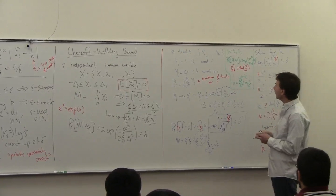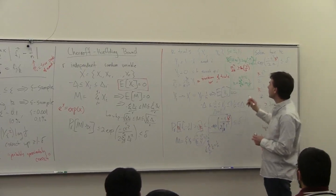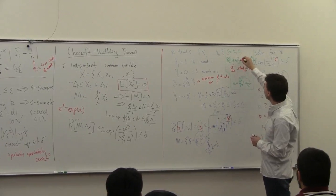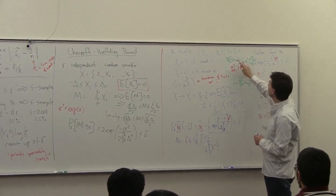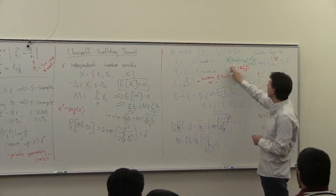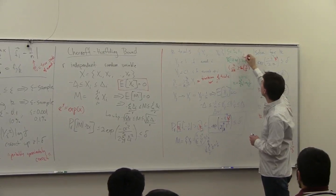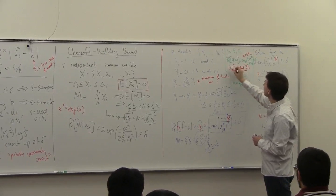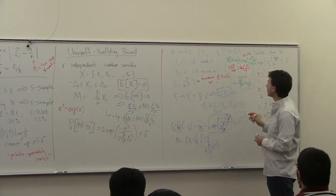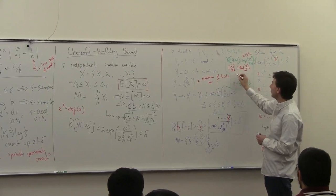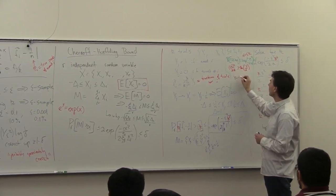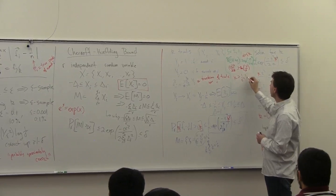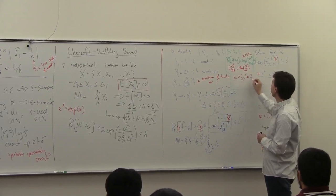What I can do instead is set my alpha so it's larger. So if I want the sum to be alpha·k on the right side, what I can do is set alpha to be epsilon·k. Then I have a k squared, and I can get this bound that k is going to be greater or equal to 1 over epsilon squared times natural log of 2 over delta.